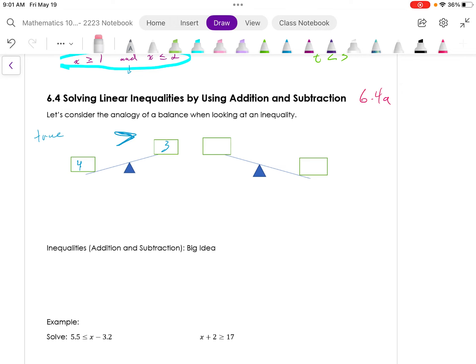Now, let's try division. 4, 3. So if I divide both sides by 4, on the left-hand side, you'd have 1. On the right-hand side, you'd have 3 quarters.